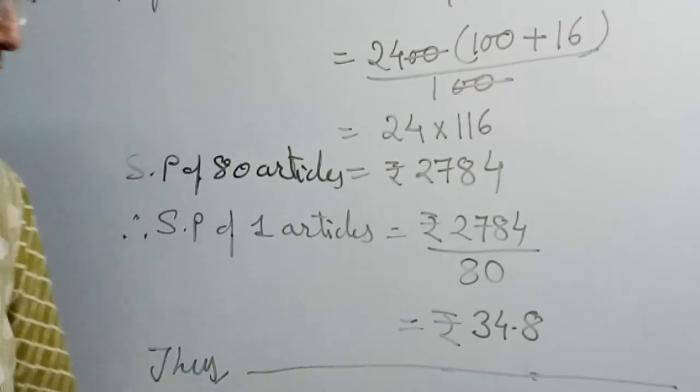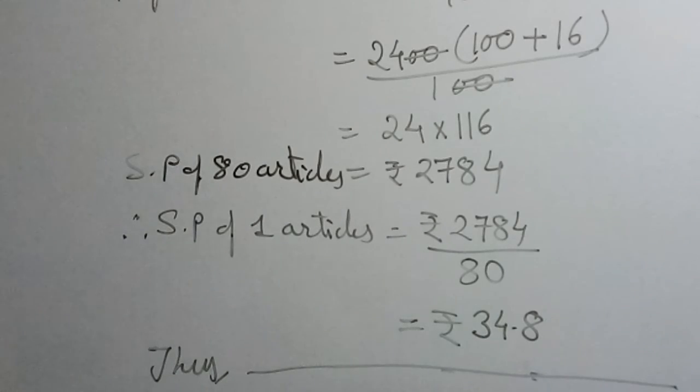Thus you can write the selling price of one article is equals to rupees 34.8.